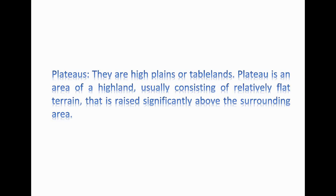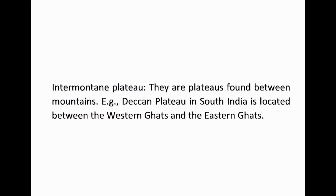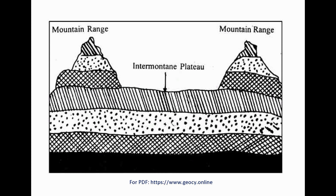Plateaus are high plains or table lands. A plateau is an area of highland, usually consisting of relatively flat terrain, that is raised significantly above the surrounding area. Types of plateaus are Intermontane Plateau, Volcanic Plateau, and Piedmont Plateau. Intermontane Plateaus are plateaus found between mountains. For example, the Deccan Plateau in South India, located between the Western Ghats and the Eastern Ghats.